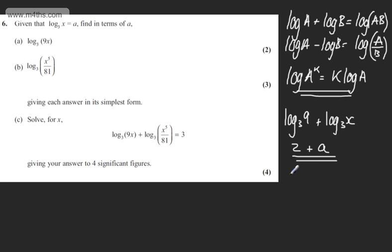In part b, we have now log to the base 3 of x to the power of 5 minus log to the base 3 of 81. I'm going to use the power law and bring the 5 down to write this as 5 log to the base 3 of x minus log to the base 3 of 81. This is simply the power 3 is raised by to get 81, which is 4. We know log to the base 3 of x is equal to a, so we can write this as 5a minus 4. So we've given now both of those values in the simplest form.